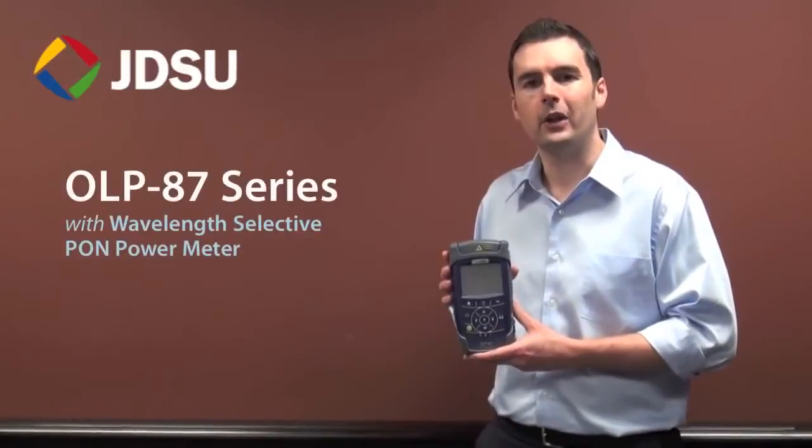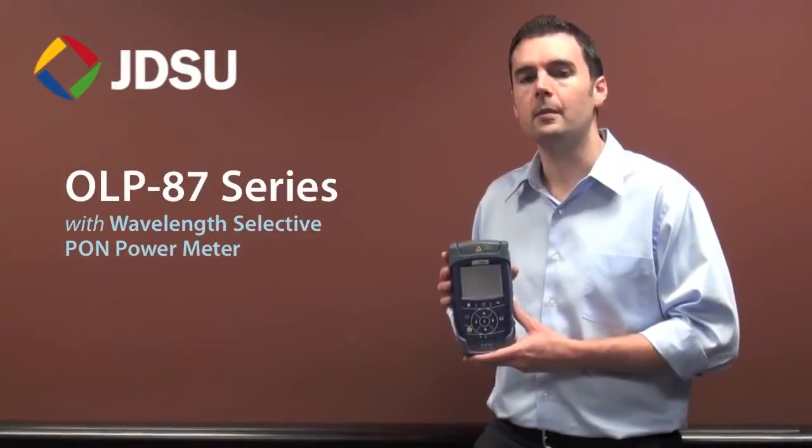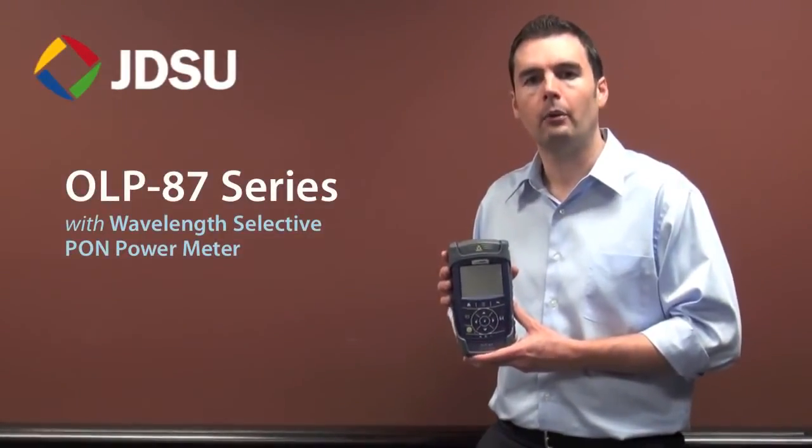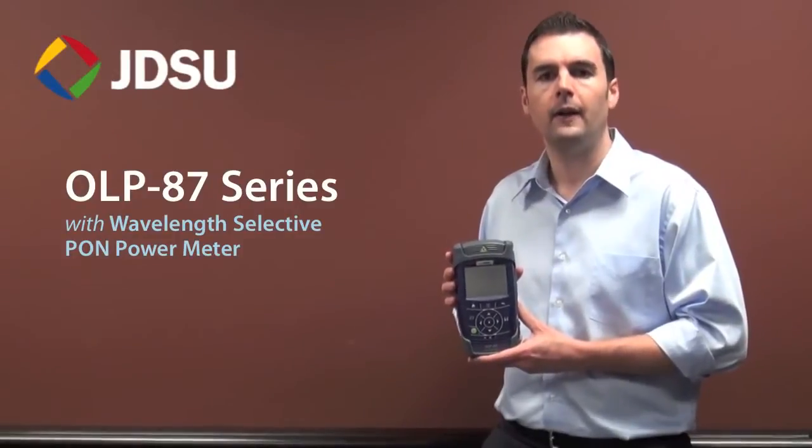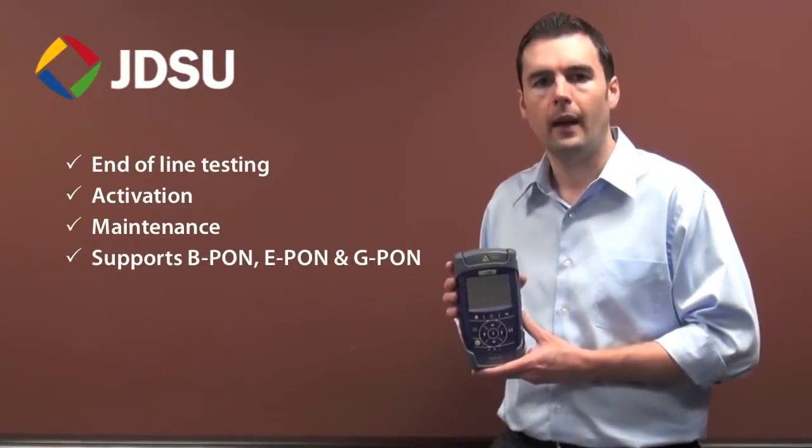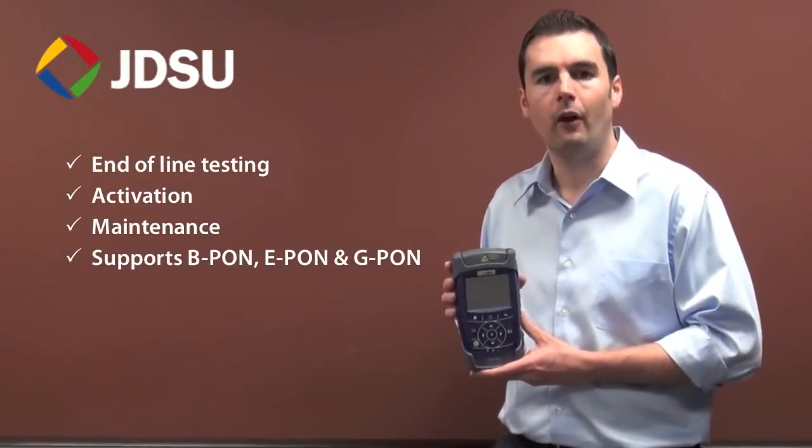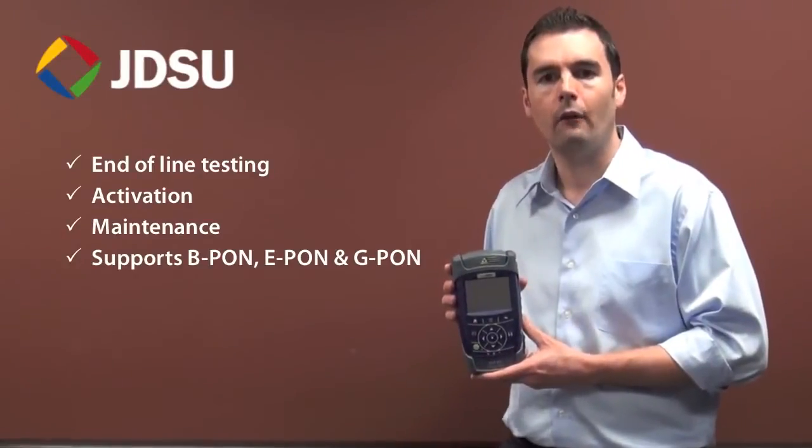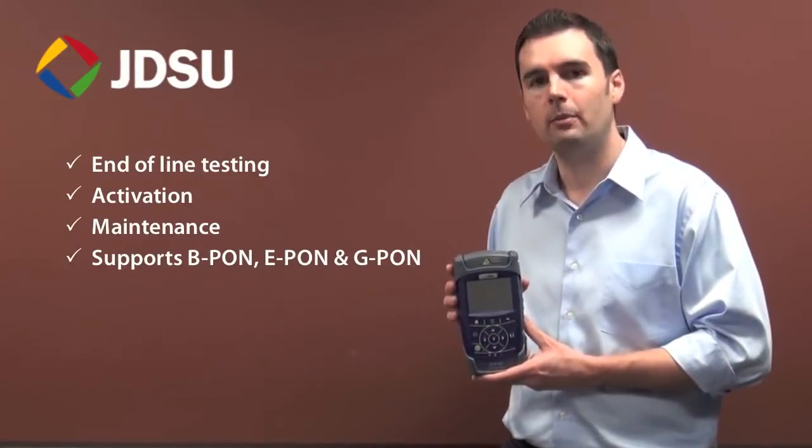And the last one here is the OLP87. This is similar to an OLP82, but rather than having a standard OPM, it features a wavelength selective PON power meter with through-mode capability, which is ideal for fiber end-of-line testing, activation, and maintenance of all fiber of the home PON signals for B-PON, E-PON, and G-PON networks.